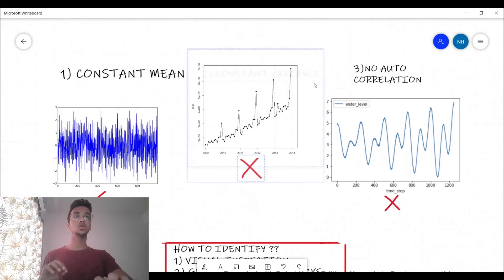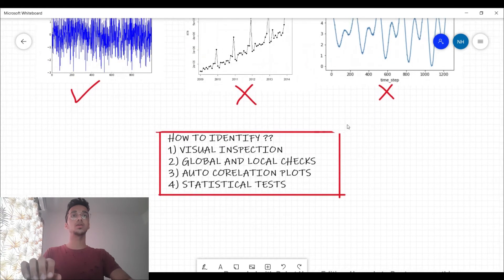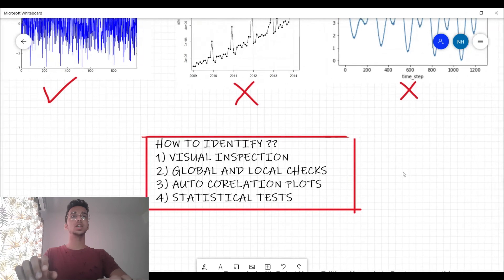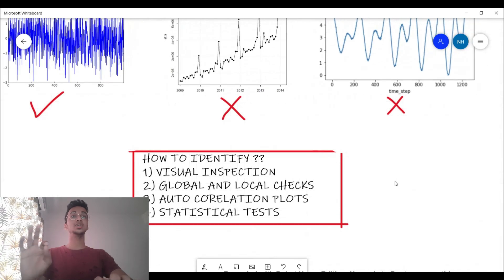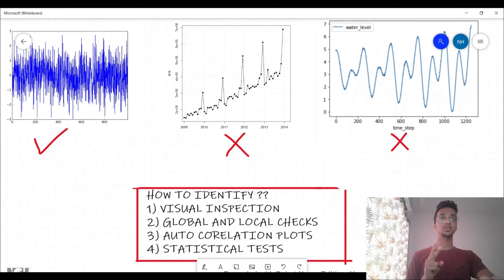So the methods that you use for identification are broadly this: First is visual inspection like we just did. Second is global and local checks. The first two criteria were constant mean and constant variance. So you can take the mean of the whole sample, which we call the global check, and then you can do local checks, meaning for particular periods in the time series. If the mean does not seem to be constant or the variance does not seem to be constant, you can again disqualify that.